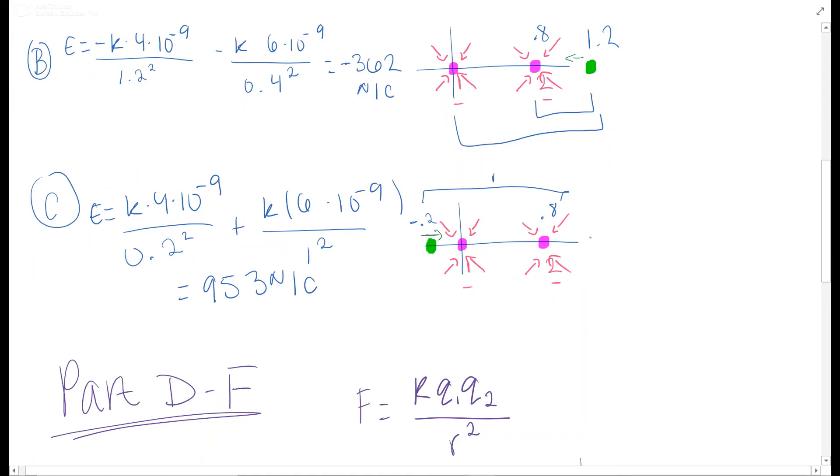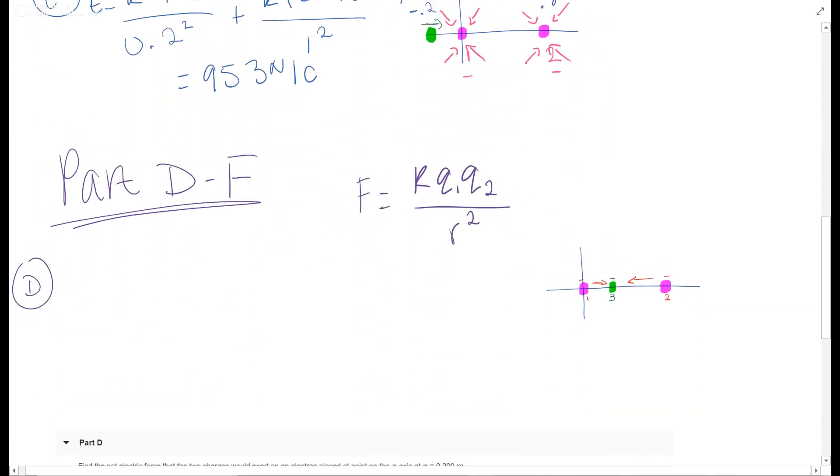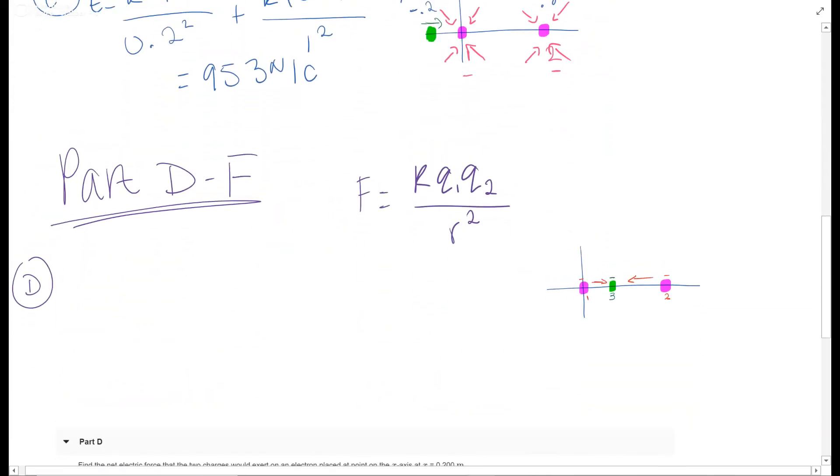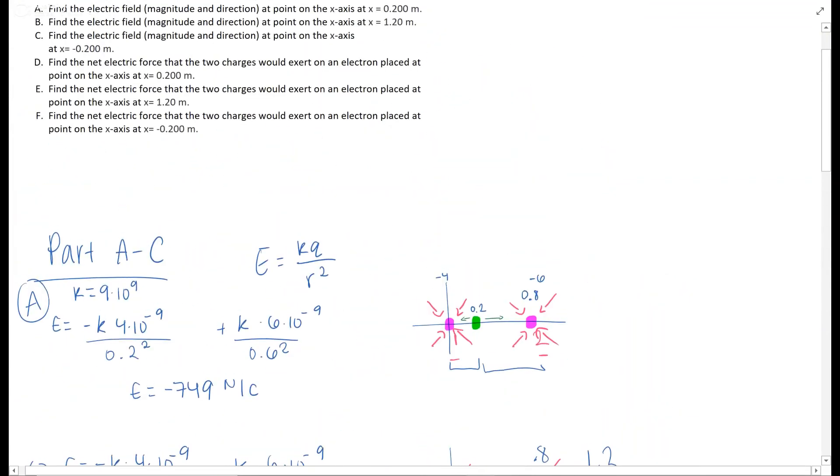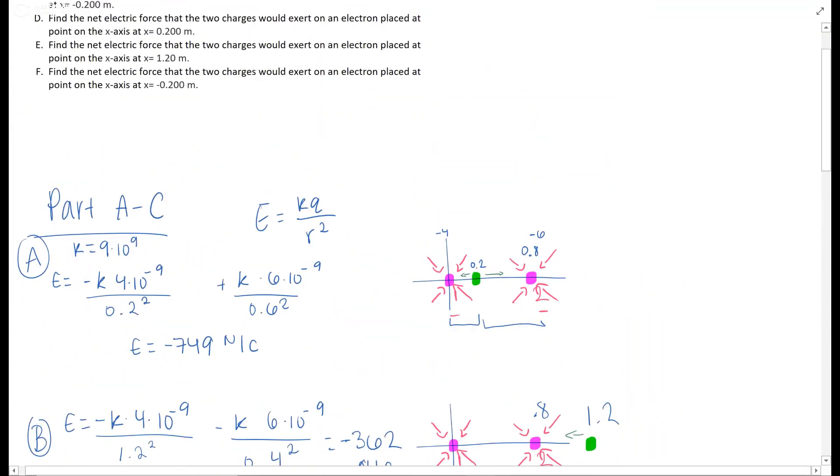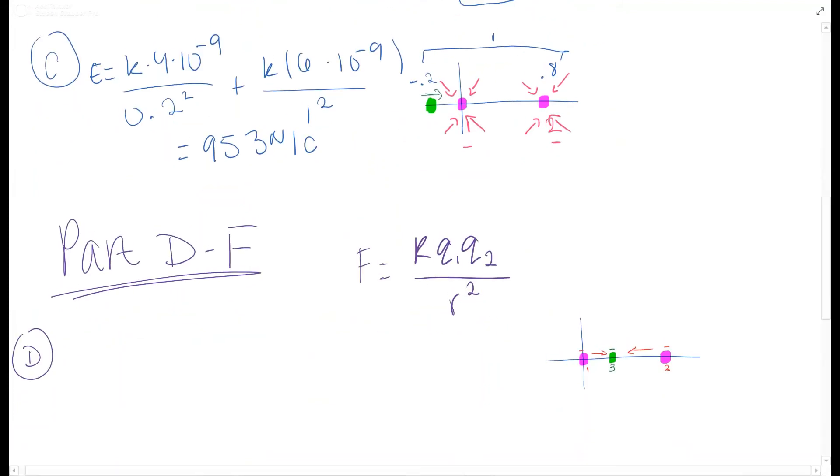Now for part D, E, and F, we're going to use a new equation. Because we are finding the force now. As you can see, the net electric force. And it's the same distances. So for D here, we're going to use this equation KQQ2 over R squared, Coulomb's law.